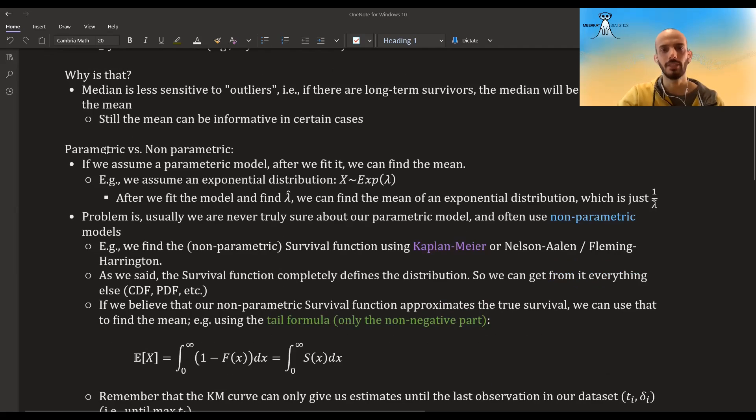Probably a better explanation is the distinction between parametric and non-parametric modeling in survival analysis. If we assume a parametric model, after we fit it we can easily find the mean. For example, if we assume an exponential distribution, then we can fit it like we did in a previous video - it's very easy.